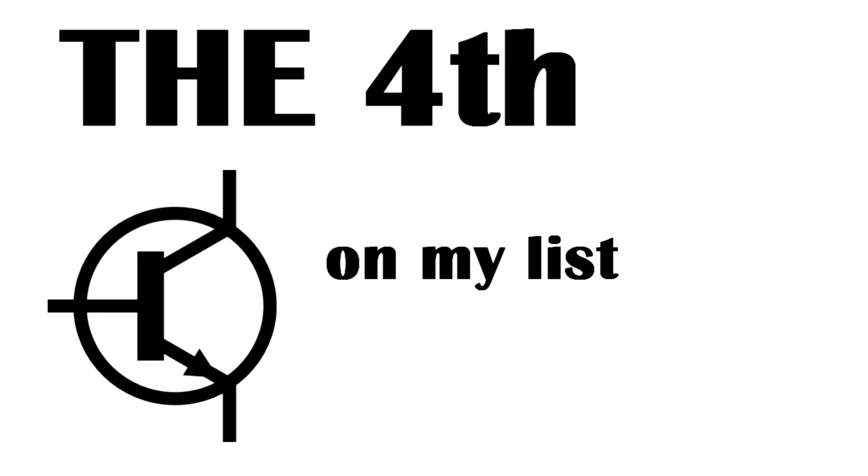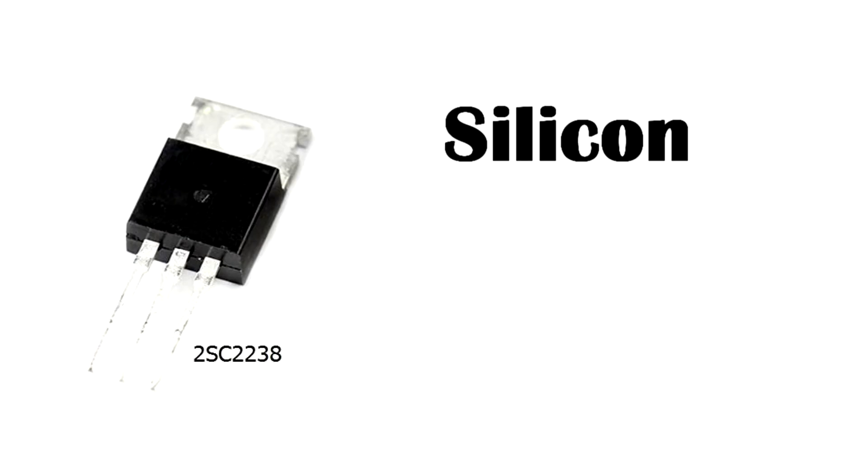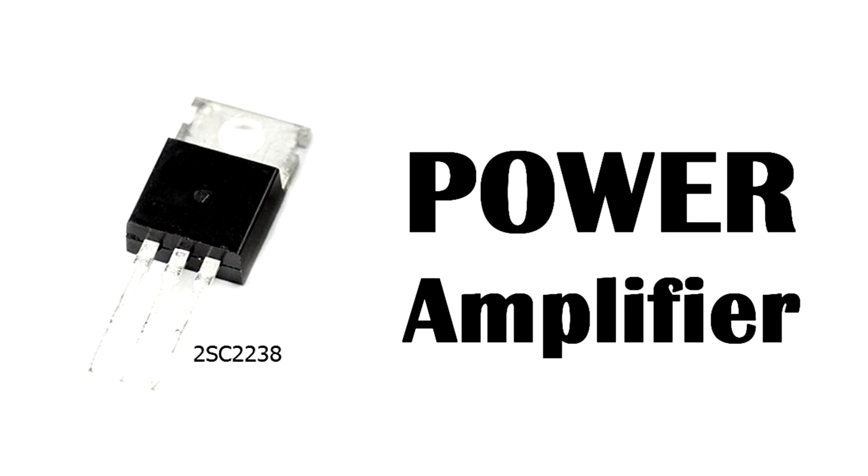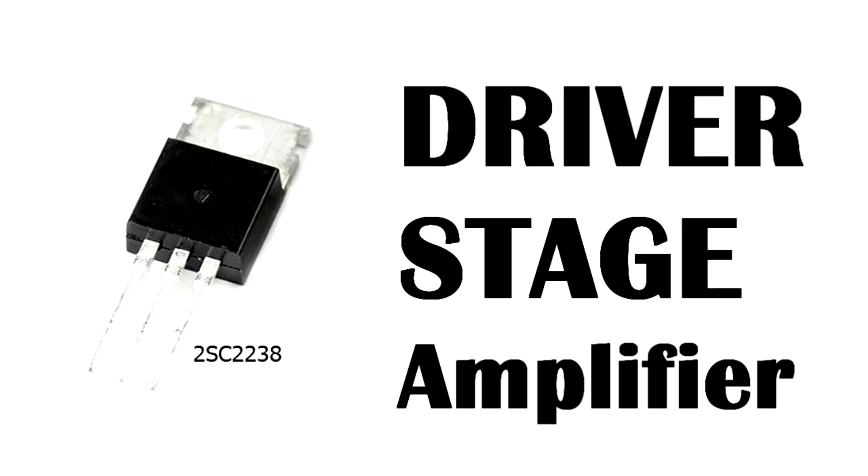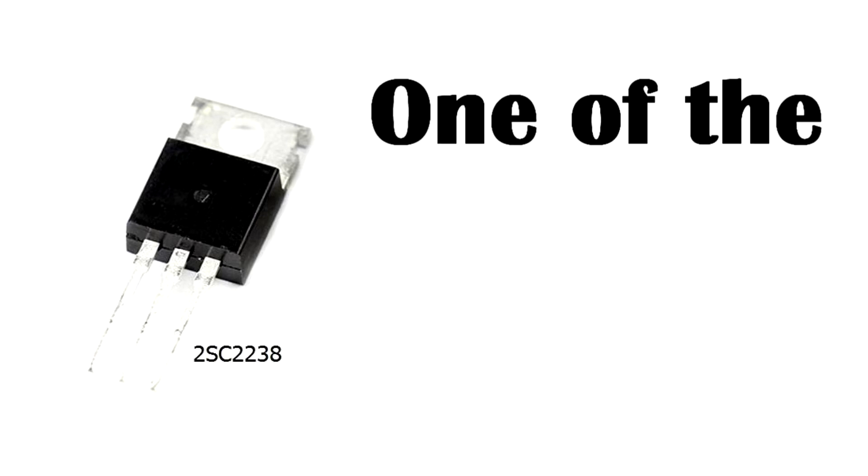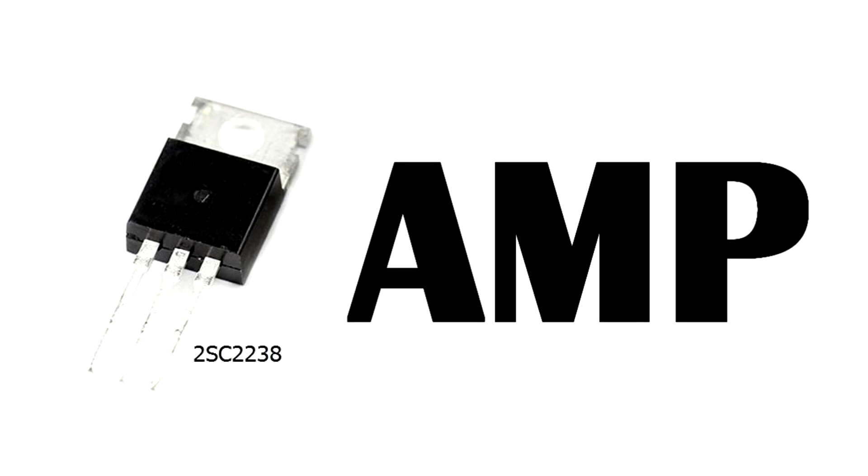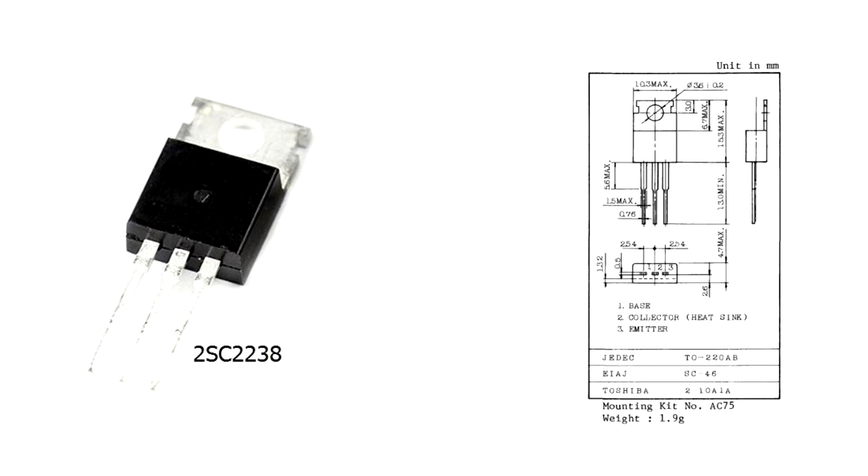The fourth transistor on my list is 2SC2238 which is a silicon NPN power transistor which is commonly used in power amplifier application and driver stage amplifier application. It is a quite unpopular transistor which has been used for more than 20 years and still is one of the best choices as power transistor in amp application.